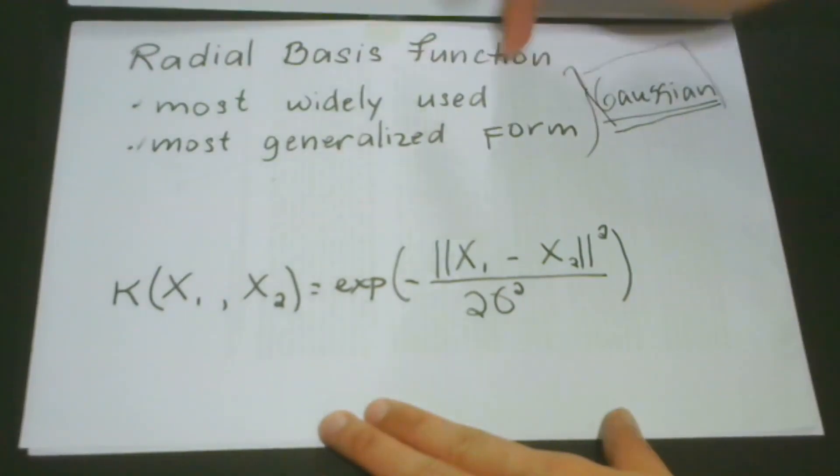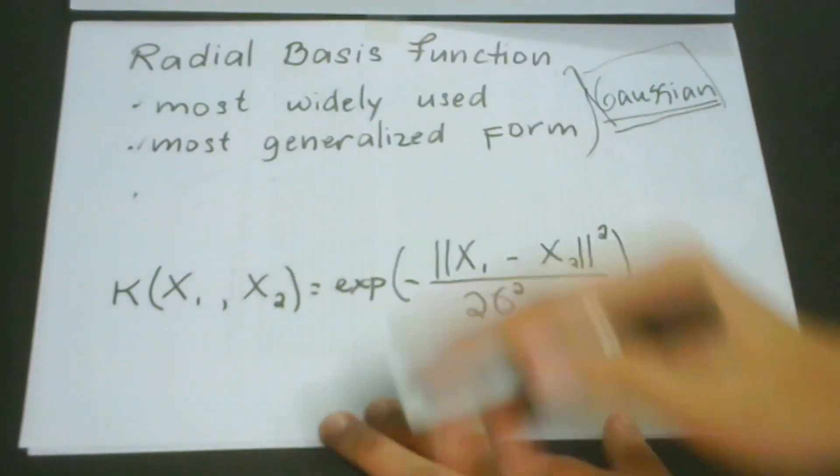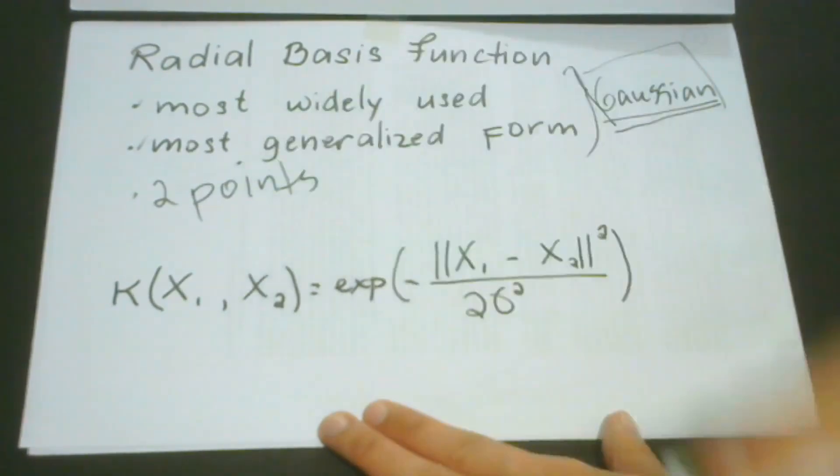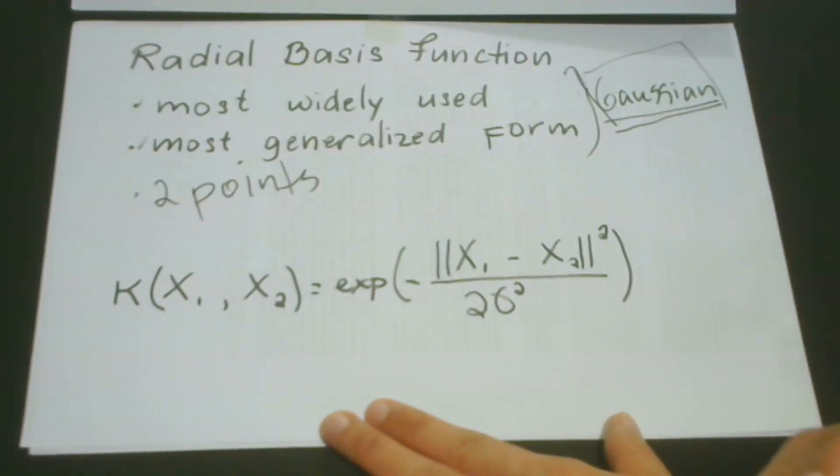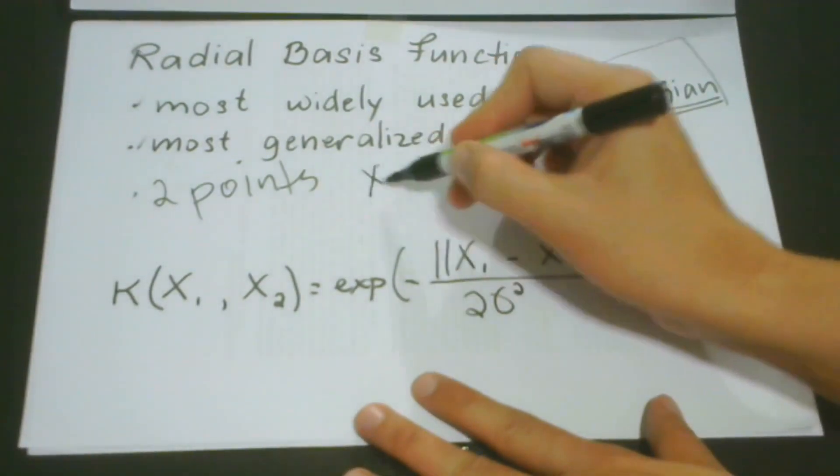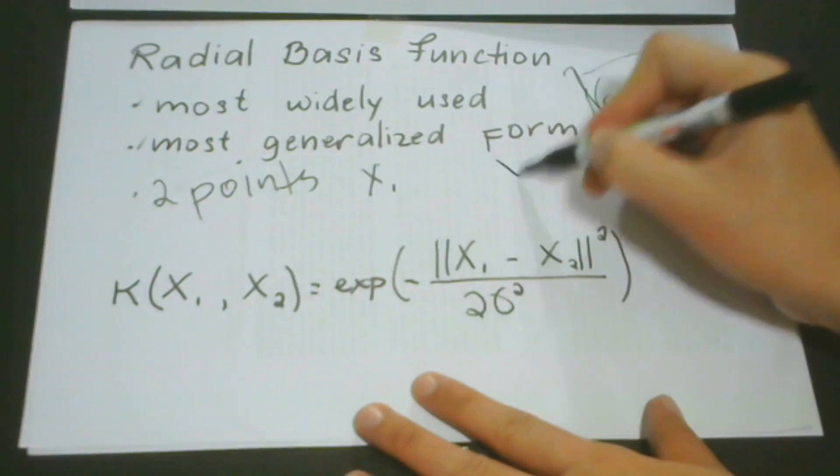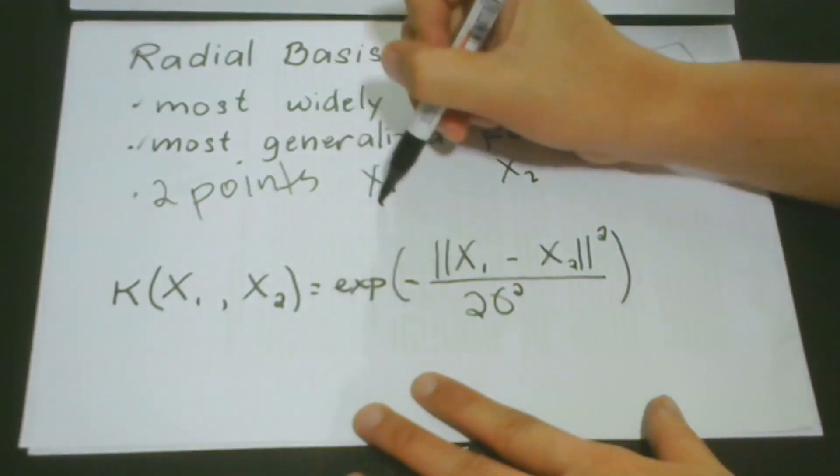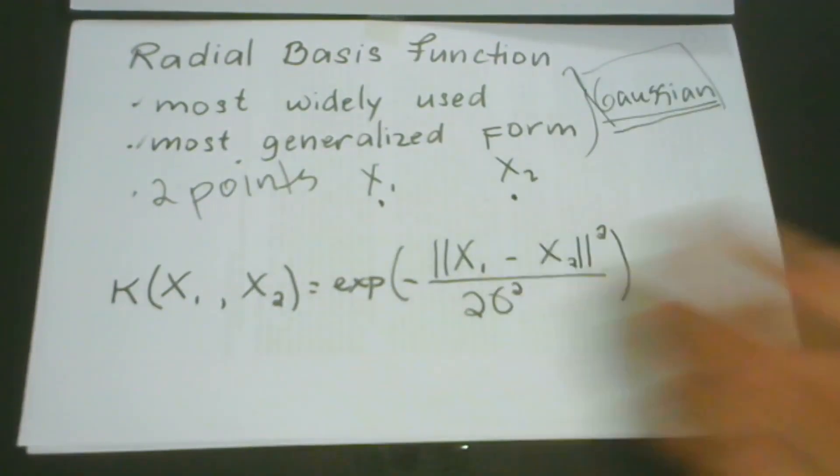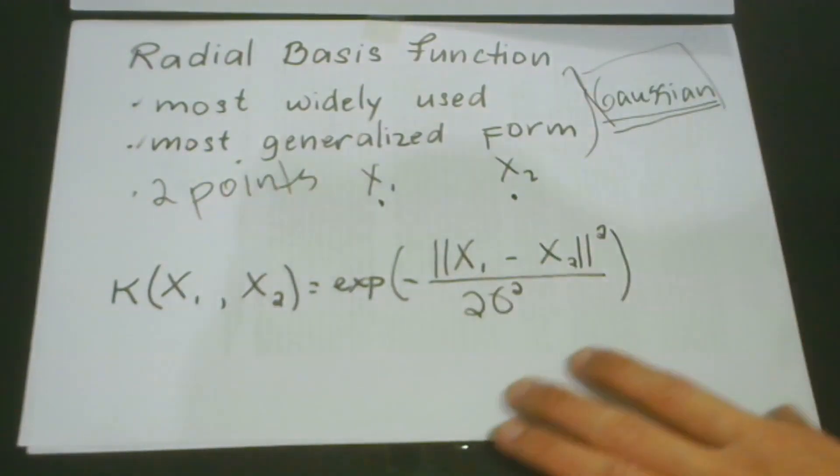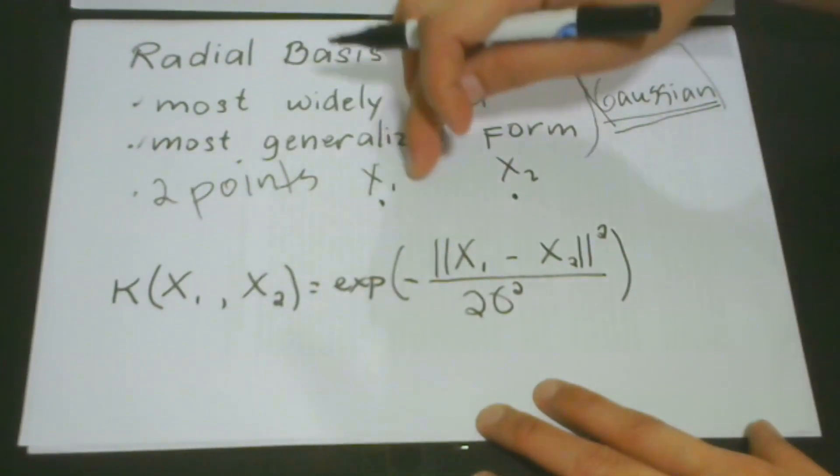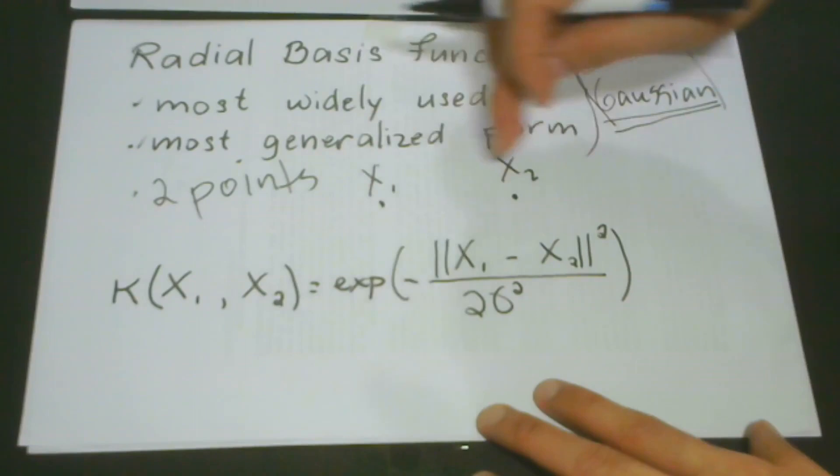A Radial Basis Function always functions for two points. So it can never be applicable when we are talking here of only one point. So for example, we have the point x1 and we have the point x2. This is the point and this is another point. So using a function, a Radial Basis Function, we compute for the similarity of x1 and x2.